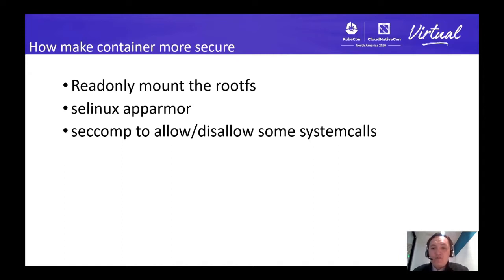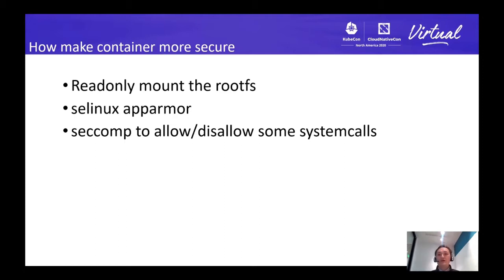Kata Container is a combination or trade-off between the virtual machine and the container. It is compatible with the OCI runtime spec. Therefore, it works seamlessly with the Docker engine. Besides, it also supports Kubernetes and CRI through the CRI-O and containerd. In other words, you can transparently select between RunC and Kata Container.